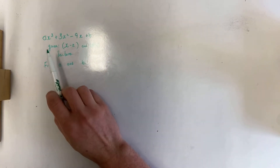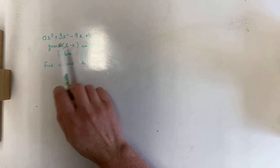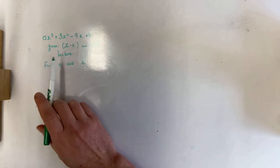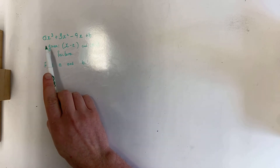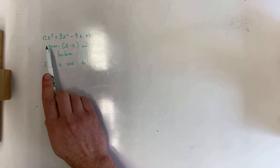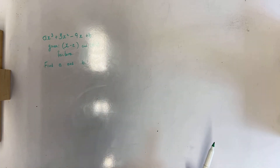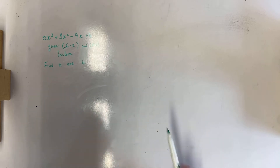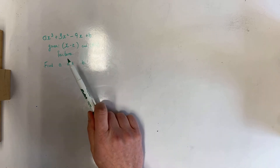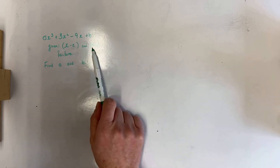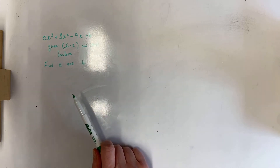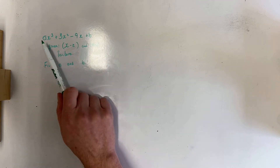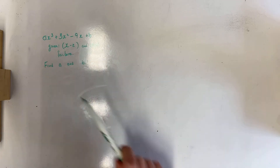In this problem I'm going to solve this question. I'm given the cubic polynomial ax³ + 3x² - 9x + b, and I'm given that x minus 2 and x plus 1 are factors of this polynomial, and I'm asked to find a and b.